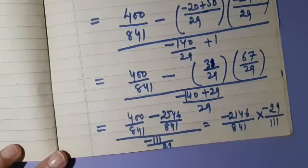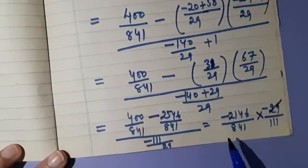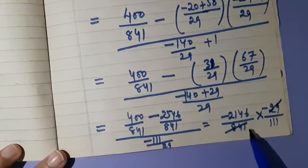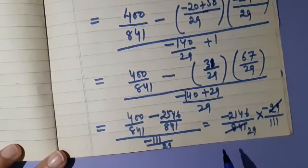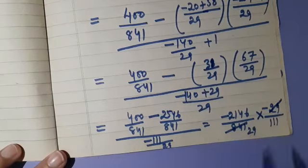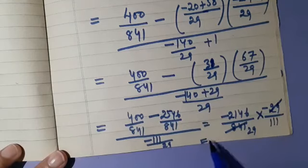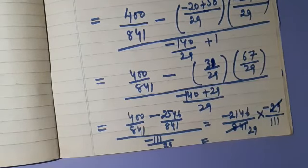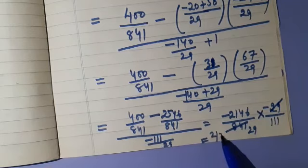We can cancel: 29 with 841, and simplify 2146 upon 29 into 111. When we simplify this we get the answer as 2 by 3, and 2 by 3 is the right hand side.